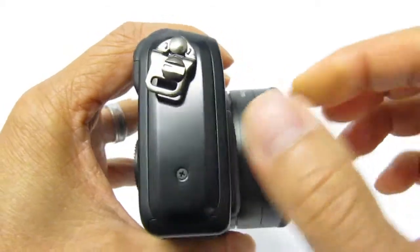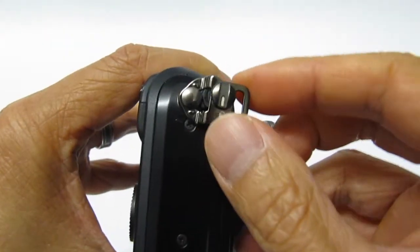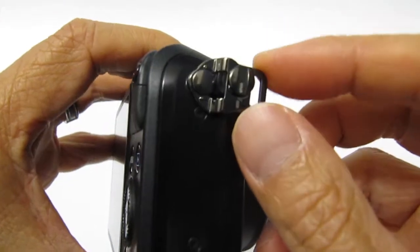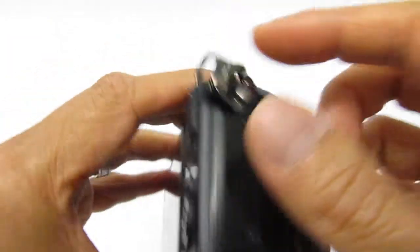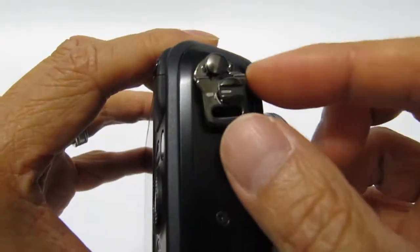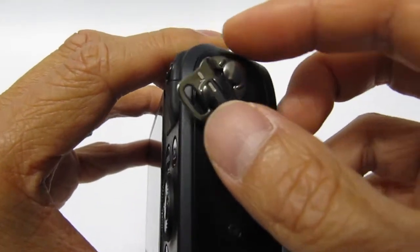I've gone ahead and taken off the neck strap and I left one of the little mounting brackets here on this side. This one is still on. So this is where I'm going to attach the wrist strap.